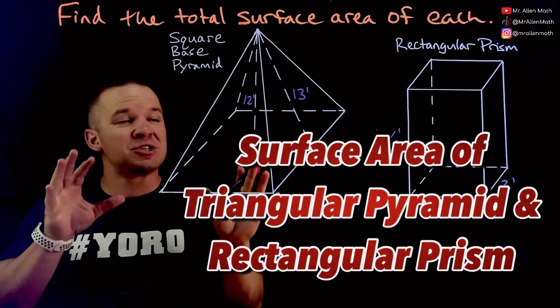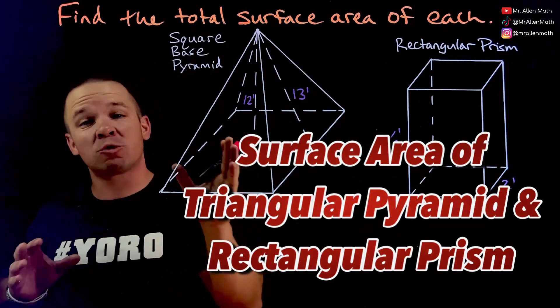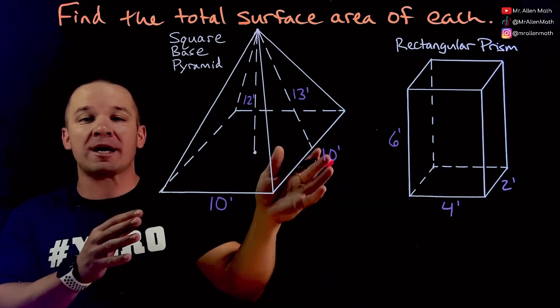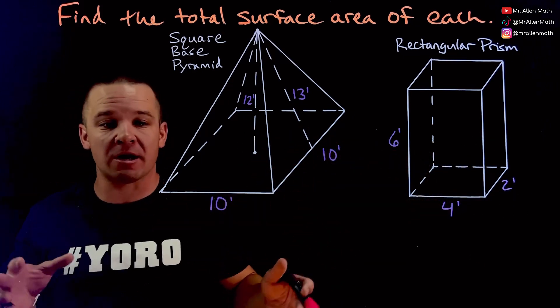What's happening dogs? Mr. Allen here with some surface area problems. We got ourselves a square base pyramid and a rectangular prism and we're going to find the total surface area of both of these.